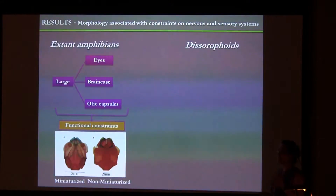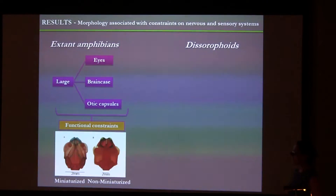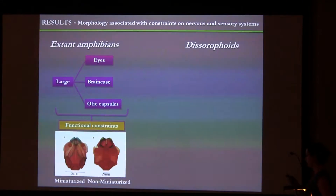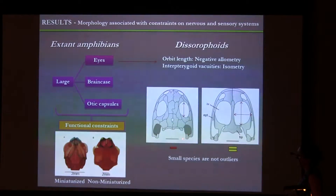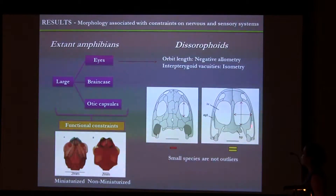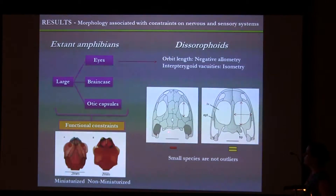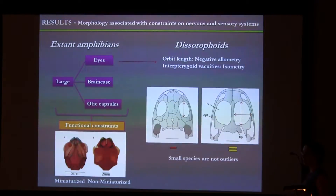Now the results. Using miniaturized lissamphibians as a model, I expected the smallest forms of disorophoids to have proportionally large eyes, large brain cases, and large optic capsules. For the eyes, I got a negative allometric pattern for orbit length, meaning the smallest forms tend to have proportionally larger orbits. However, I got an isometric pattern for the muscles of the eyes, meaning they were not larger in the smallest specimens. Since orbit size is not a good proxy for eye size, we cannot conclude that they actually had larger eyes.